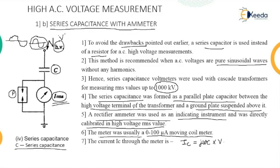That is all for this particular method of AC high voltage measurement. We will see our next topic — potential divider — in the next lecture. The concept of measurement of AC high voltage with series impedance — whether a pure resistor or pure reactance (capacitance) — has been covered. The drawbacks of pure resistance measurement are avoided with the pure capacitance with ammeter method.